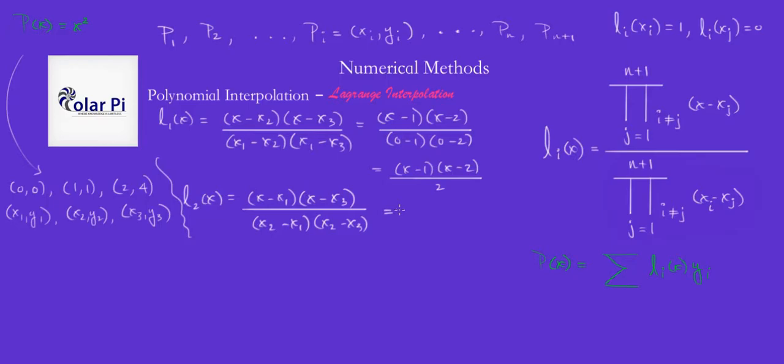And what does this look like? The numerator is X minus 0 times X minus 2. So it's just X times X minus 2.